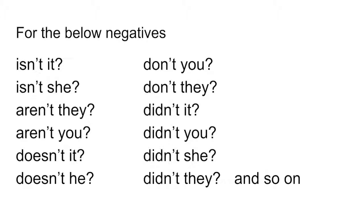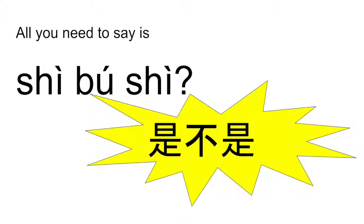For the negatives — 'Isn't it?', 'It is a good idea, isn't it?', 'She is brilliant, isn't she?' — Chinese do the same with one phrase: 'shi bu shi'. 'She is brilliant — shi bu shi.' 'It is a good idea — shi bu shi.' One phrase to replace all that headache.